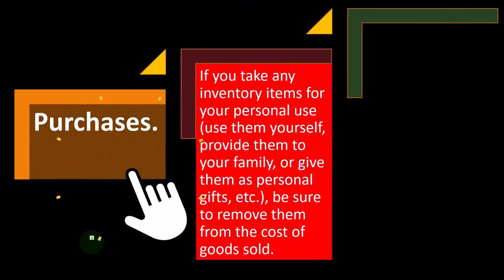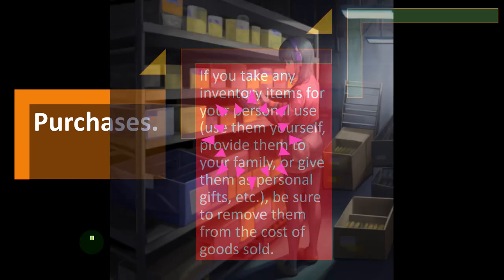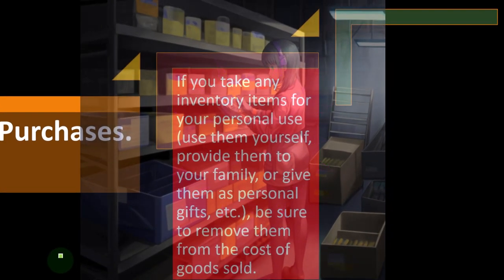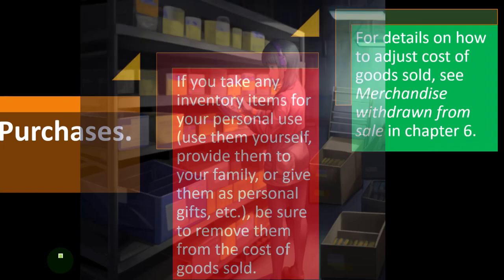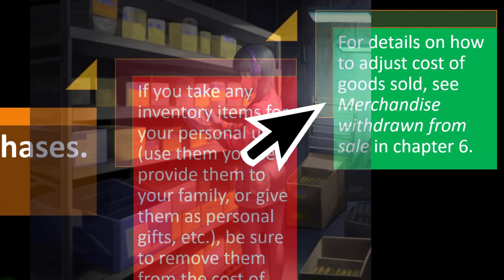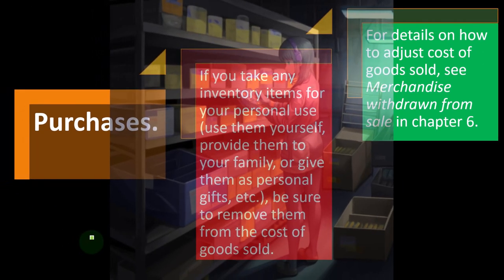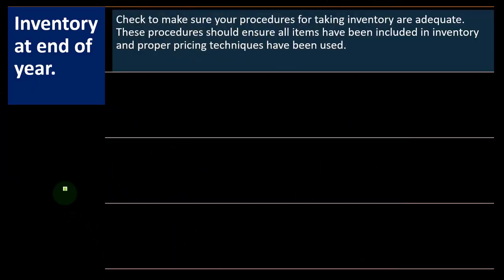Purchases: if you take any inventory items for your personal use, use them yourself, provide them to your family, or give them as personal gifts, be sure to remove them from cost of goods sold. For details on how to adjust cost of goods sold, see merchandise withdrawal from sale in chapter six. Dipping into your own stash of inventory must be properly accounted for as a withdrawal.